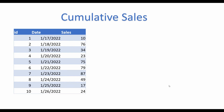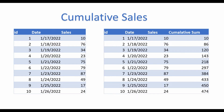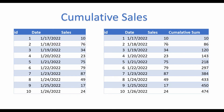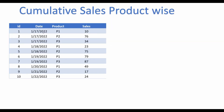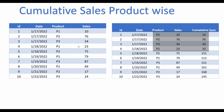For the next one, we have a similar table and here we have to show the cumulative sum on the basis of date. So for 18th January, we should have 86 as output, which will be the sales of 17th January plus the sales of 18th January. For the following one, instead of taking the cumulative sum just on the basis of date, we have to consider the products as well. So we should get 33 for product P1 on 18th Jan, which will be the sum of product P1 sales for 17th and 18th Jan.